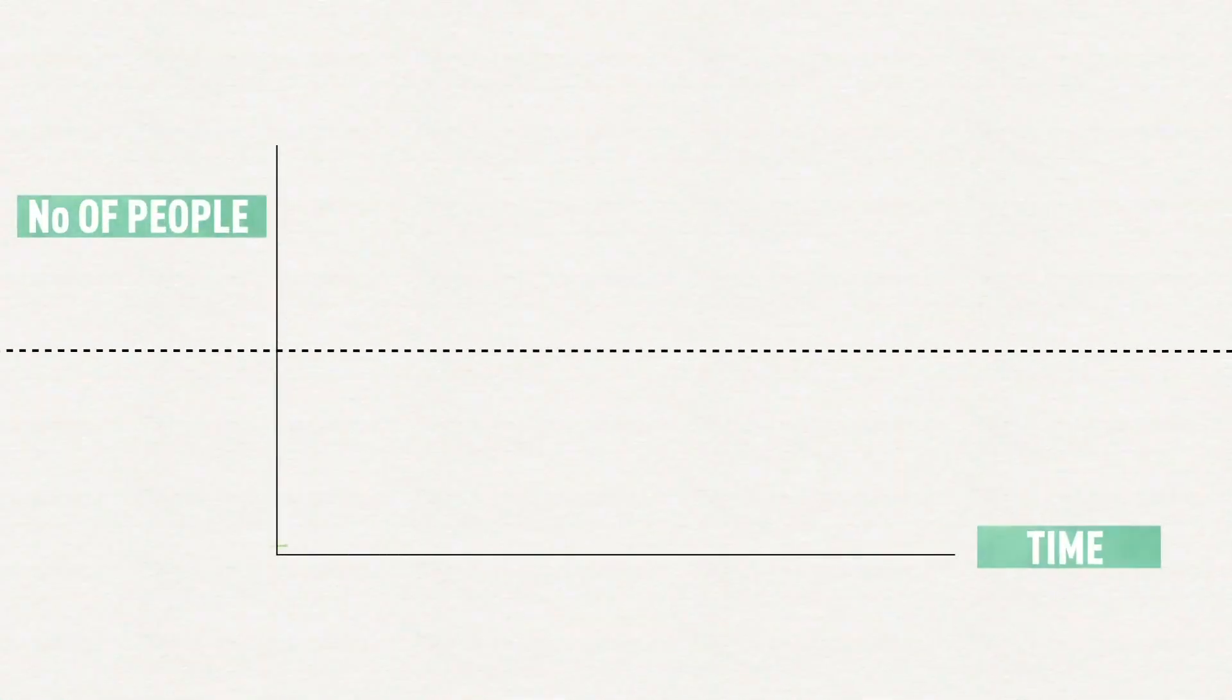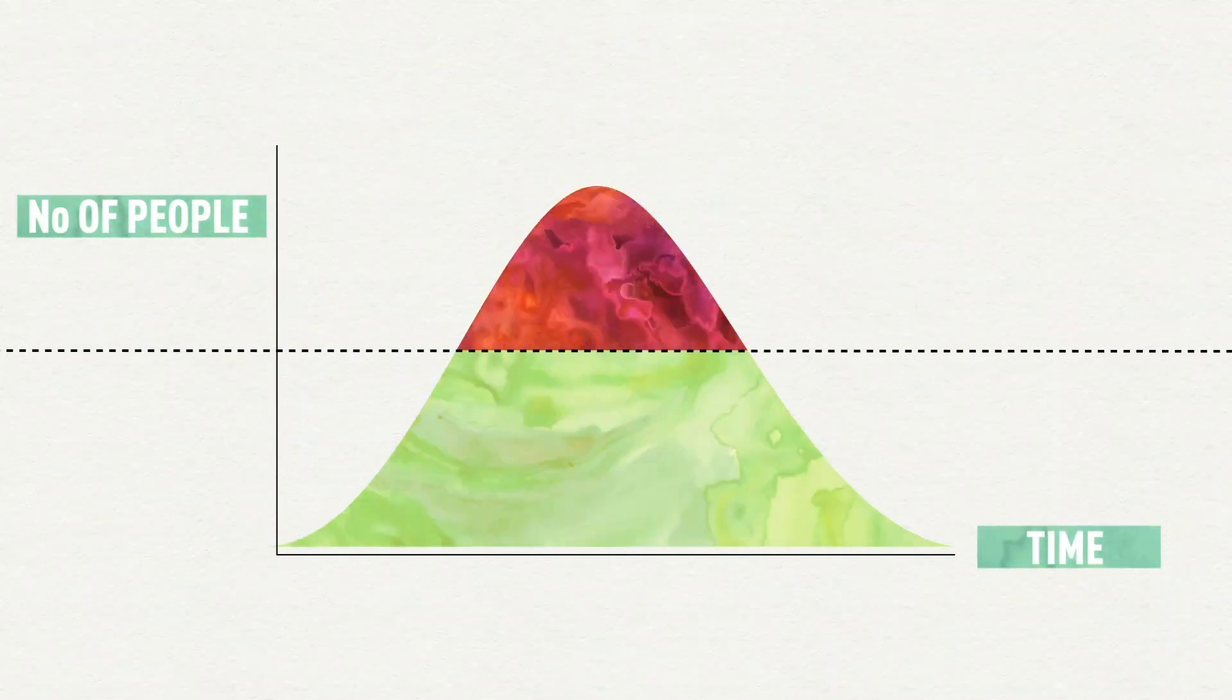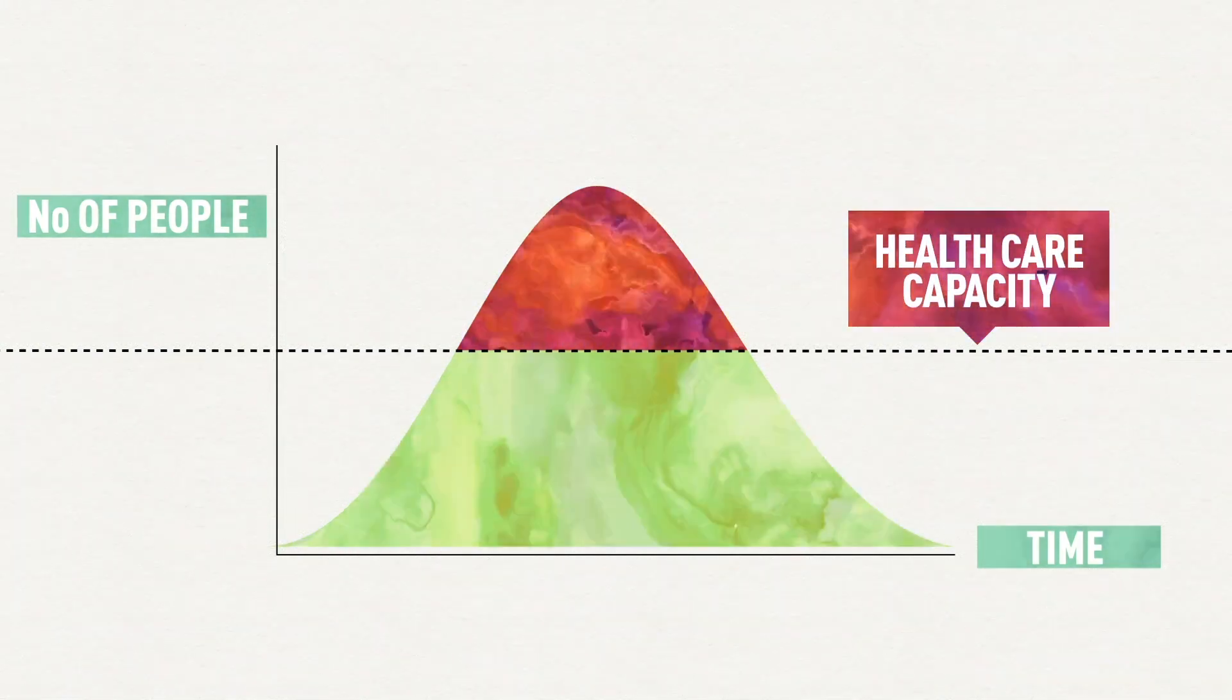When a lot of people get sick in a short period of time, the curve rises faster. If that happens, it's more likely that we'll surpass the level at which the health care system will be overwhelmed.